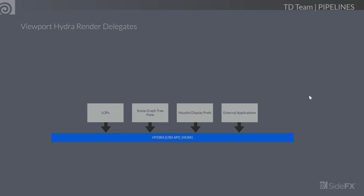Here's an illustration of the many different things that can inform Hydra. It's not just the LOPS themselves telling Hydra what to do and instructing the render delegates. There's a lot more. LOPS obviously inform Hydra as you move the display flag down. Any edits you make in the scene graph are captured as an implicit layer you're working on. The scene graph tree also informs Hydra about which payloads to load or unload, display options, preferences, and settings.